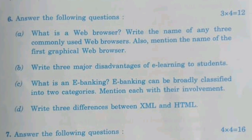Write three major disadvantages of e-learning. What is e-banking? E-banking can be broadly classified into two categories: transactional and non-transactional. Write three differences between XML and HTML: full form difference; XML is user-defined, HTML is predefined; XML is case sensitive, HTML is not case sensitive.